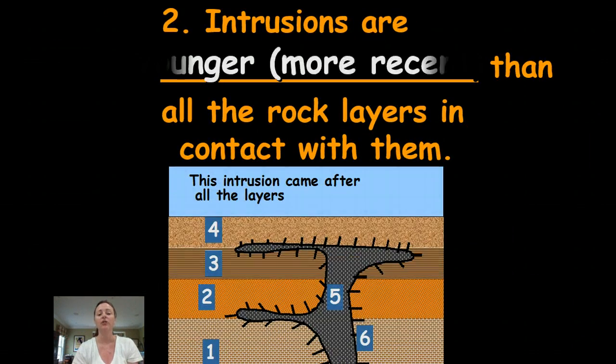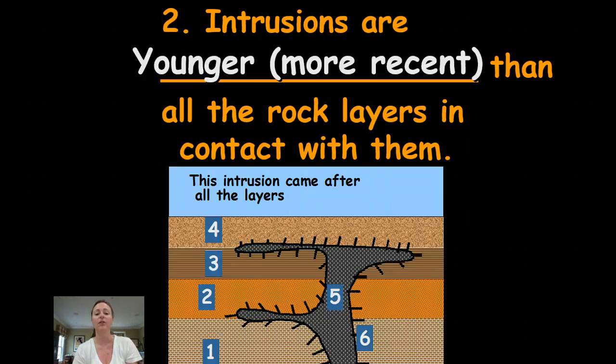So intrusions are younger, more recent than all the rock layers in contact with them. In this picture it's a little different than the picture we just showed you because in this layer there is contact metamorphism along the top of the igneous intrusion. So that indicates that this top layer was deposited and last the igneous intrusion came up and changed the rock around it immediately known as contact metamorphism.